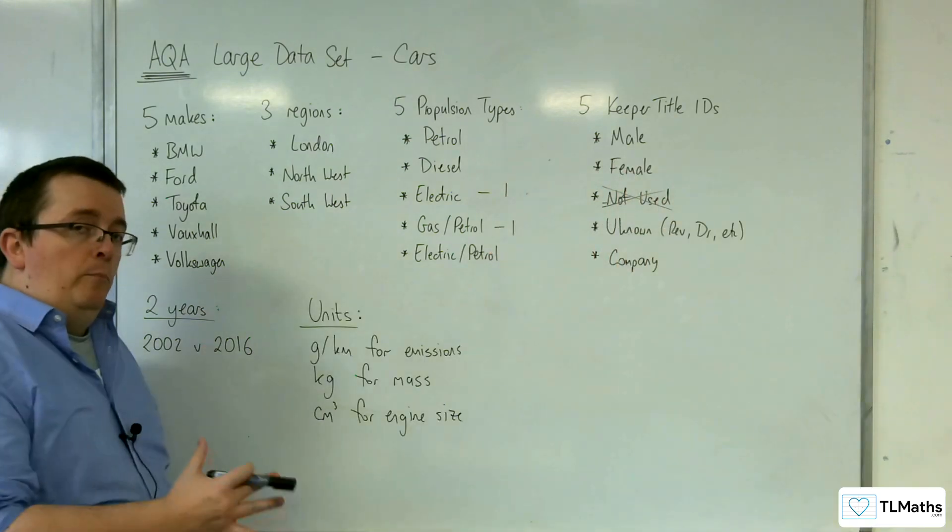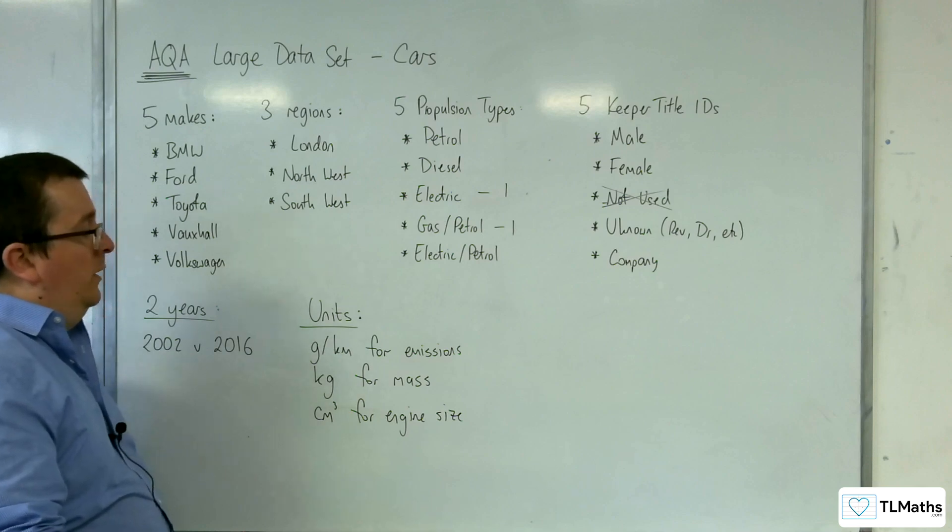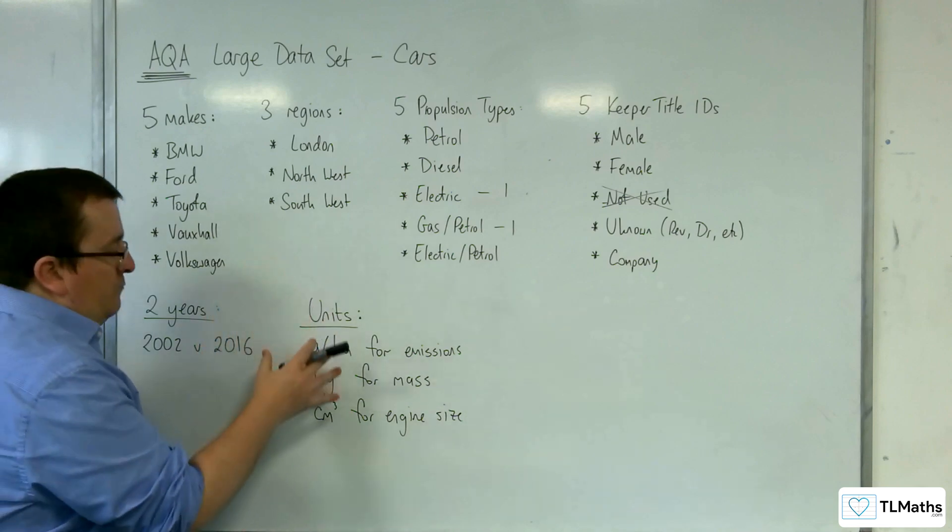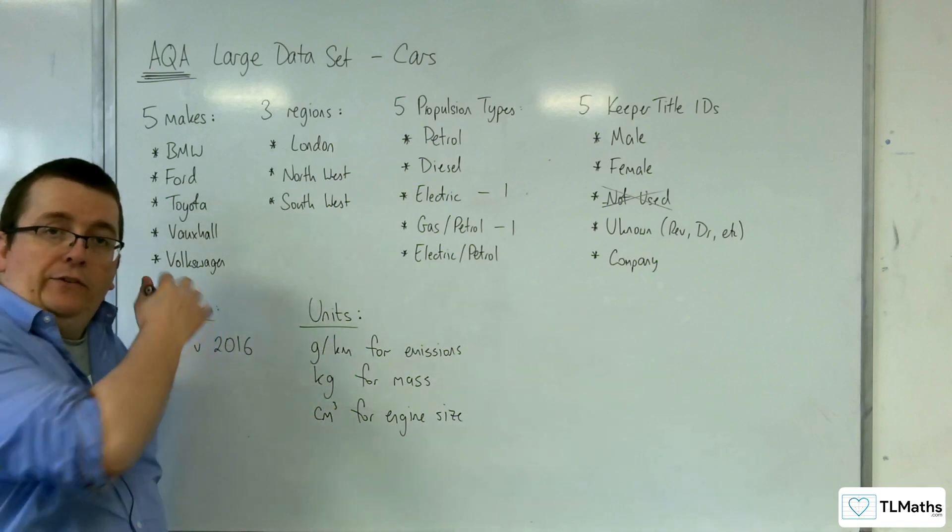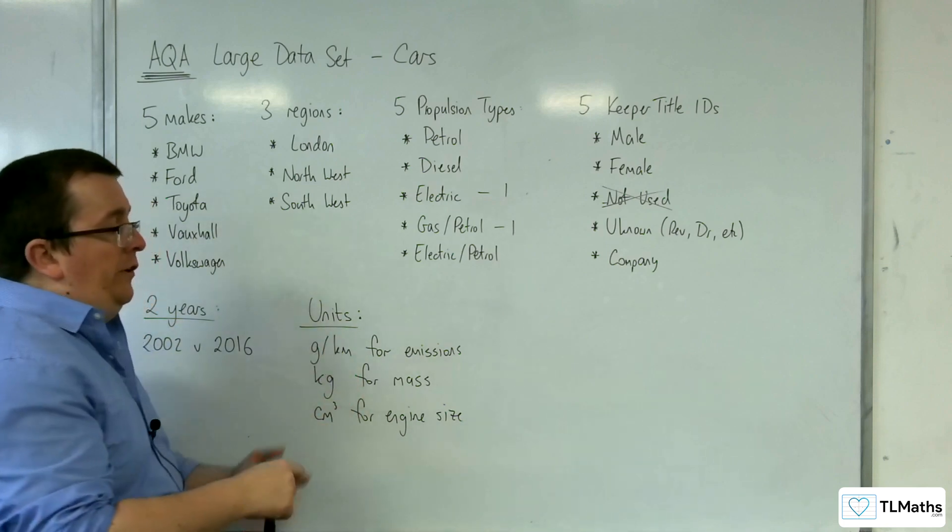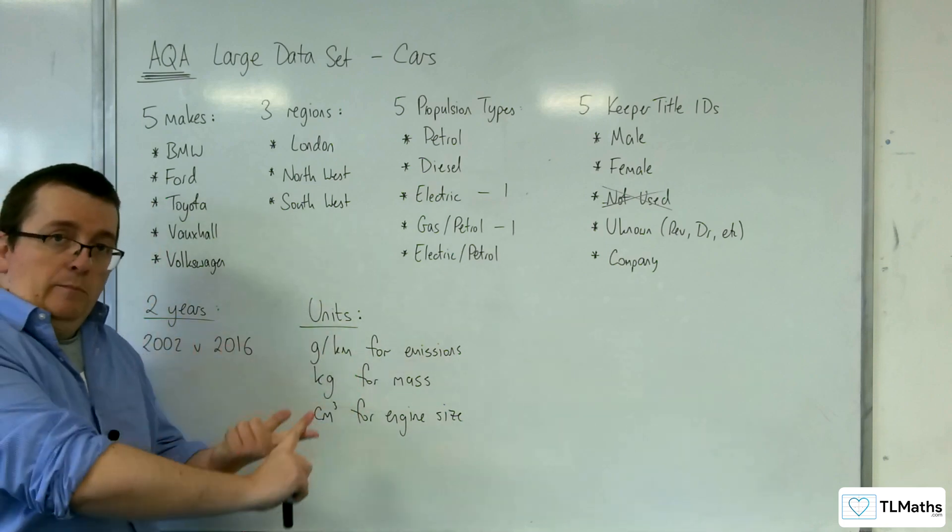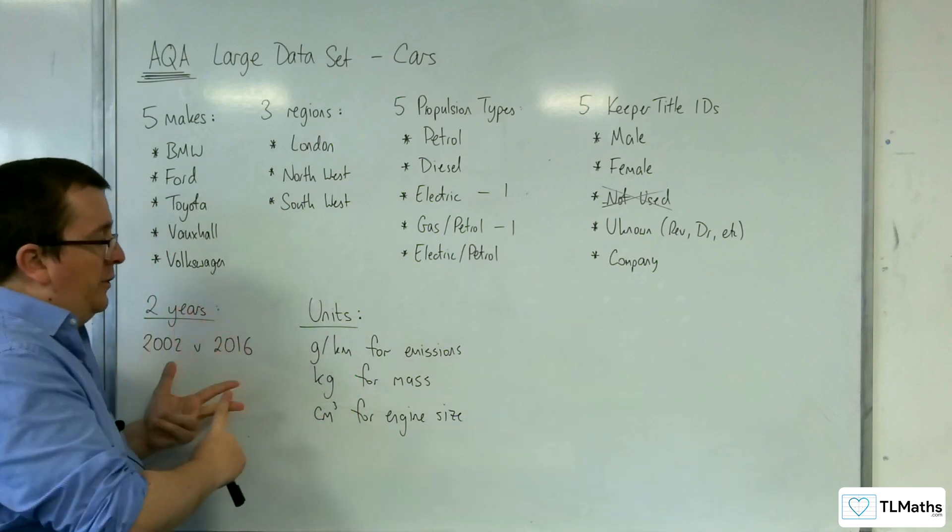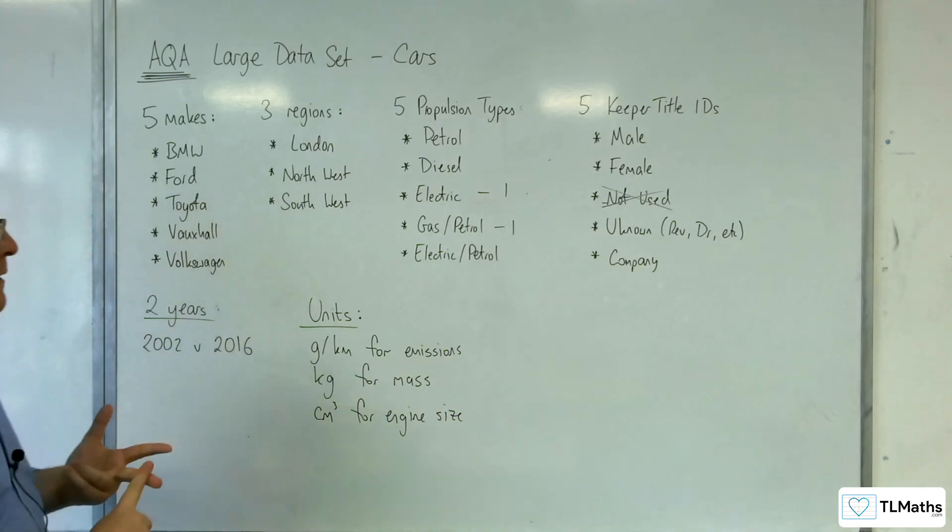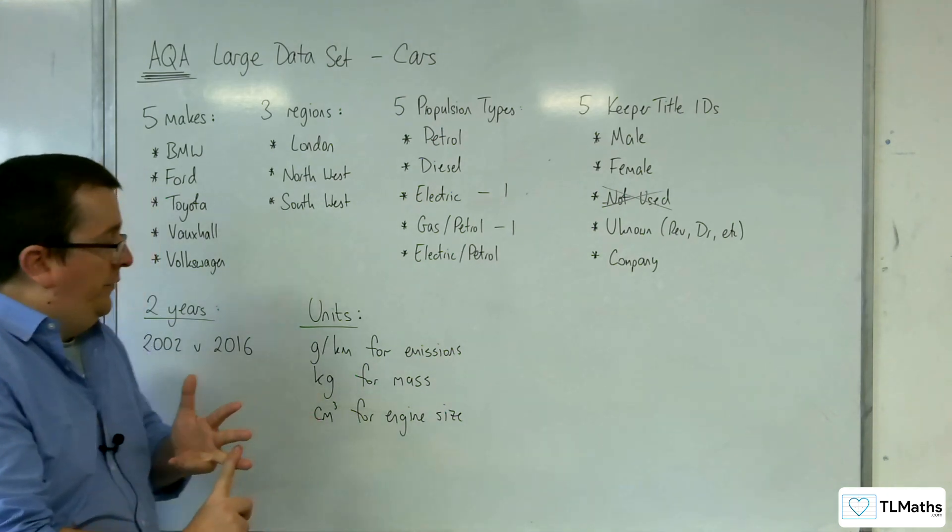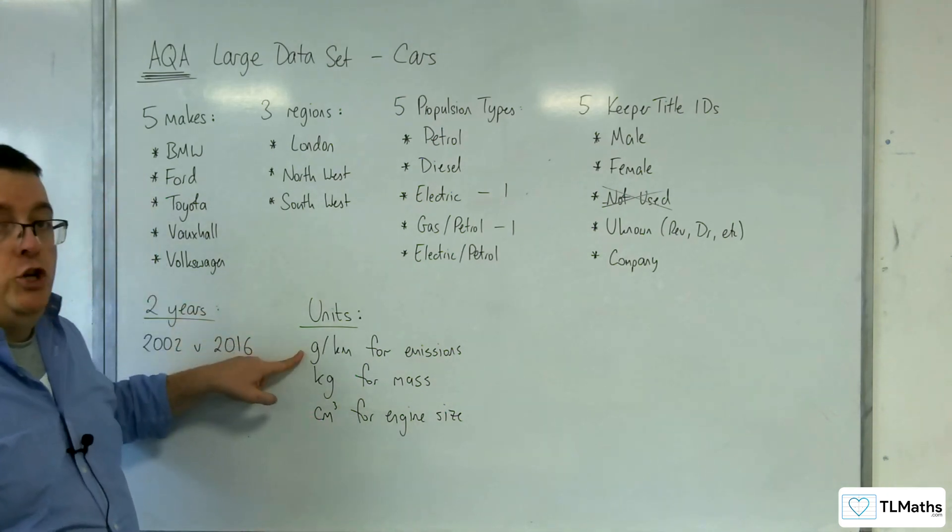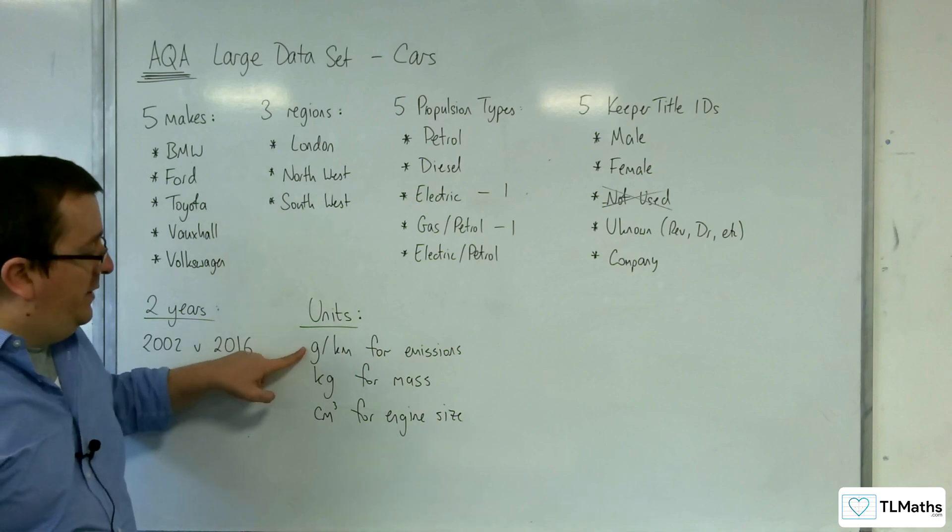I think it's very important that you know the units for the different categories that they consider. So for the emissions, that includes CO (emissions of carbon monoxide), CO2 (carbon dioxide), and hydrocarbons, etc., they are measured in grams per kilometre.